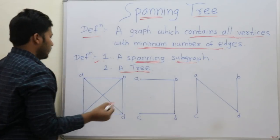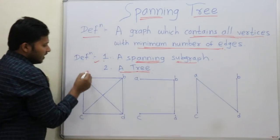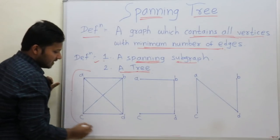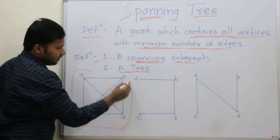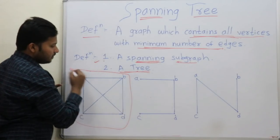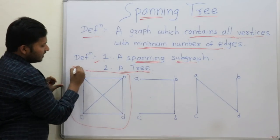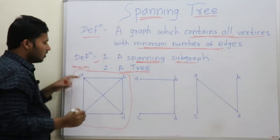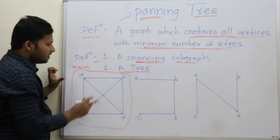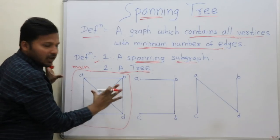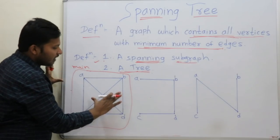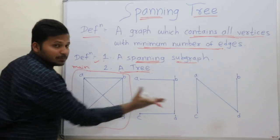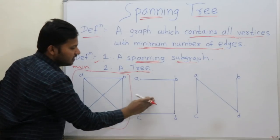Here is an example. This is the main graph. From this main graph we are forming a spanning tree.